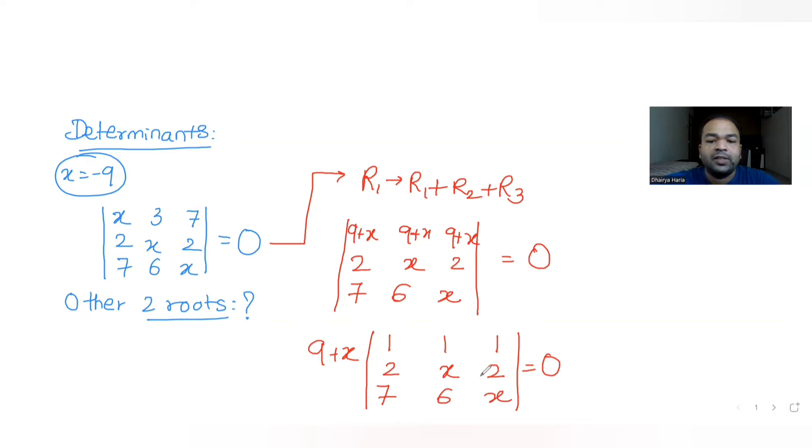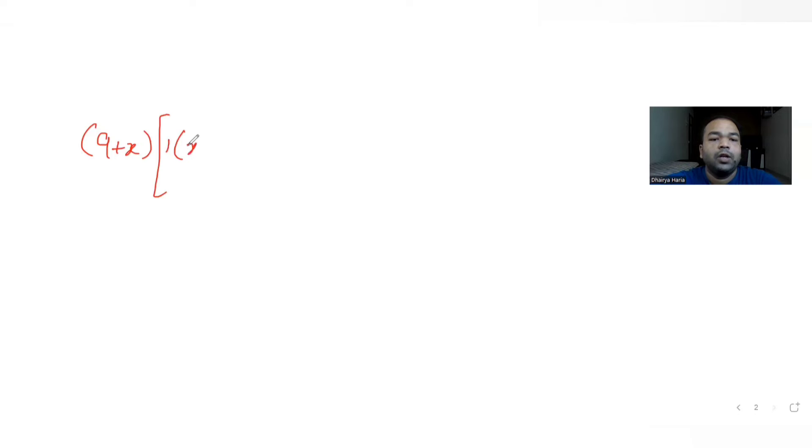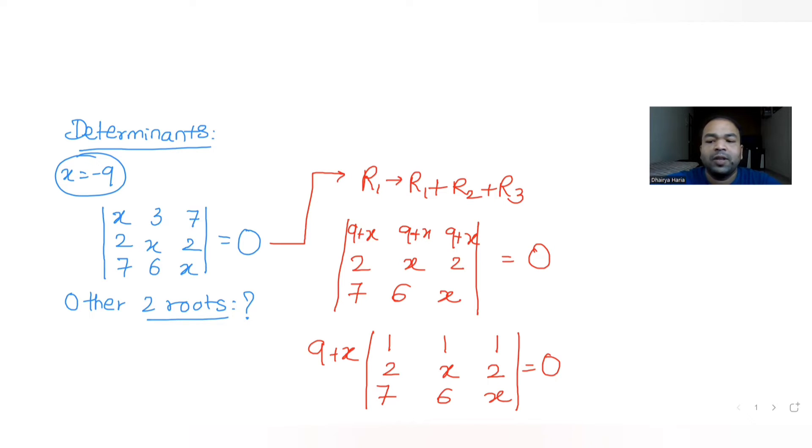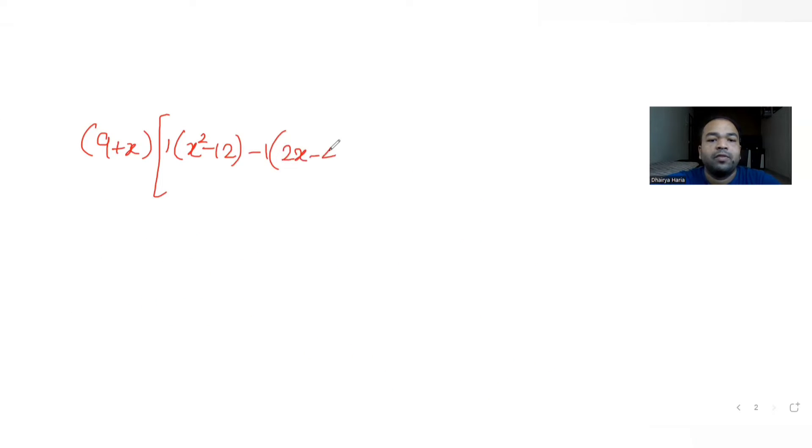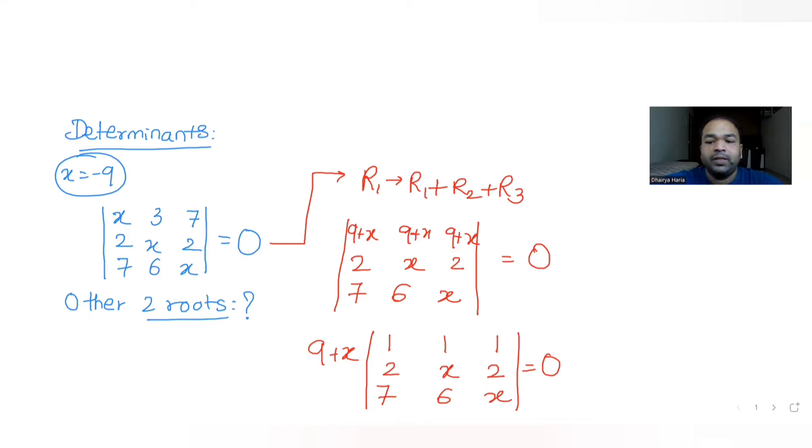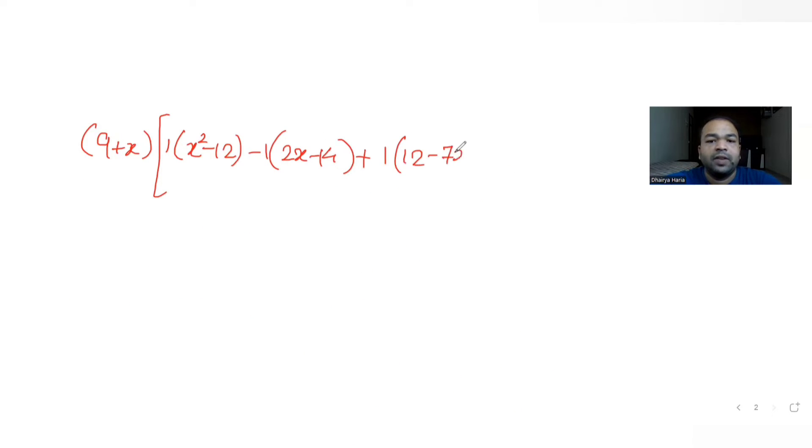If I further solve this, I get 9 plus x times 9 plus x into the determinant. If I try to solve it, 1 times x squared minus 12, so I get 1 times x squared minus 12 minus 1, so minus 1 times 2x minus 14. So I get 9 plus x times x squared minus 2x plus 14 minus 12 plus 7x equals 0.